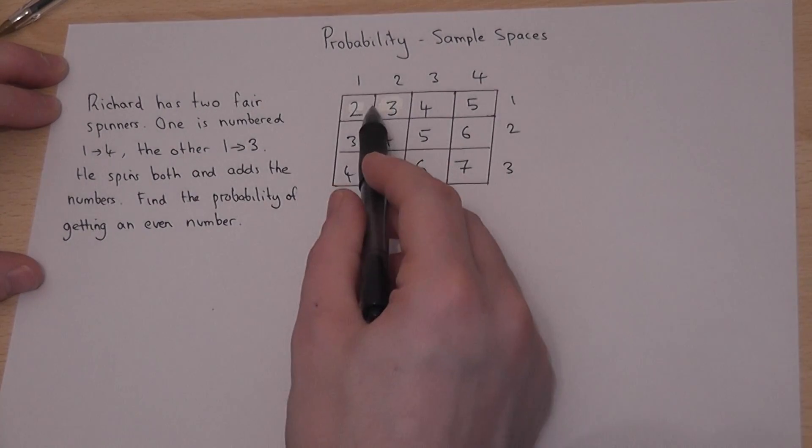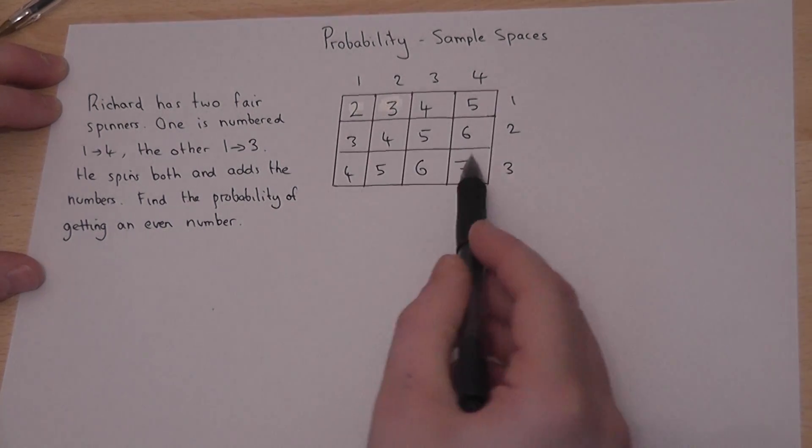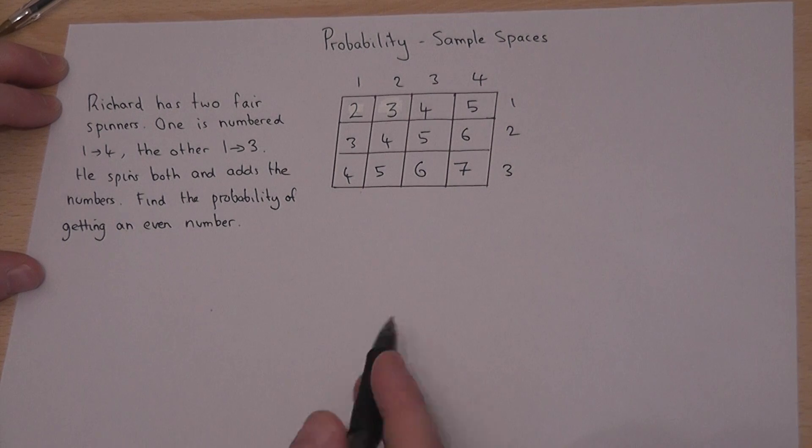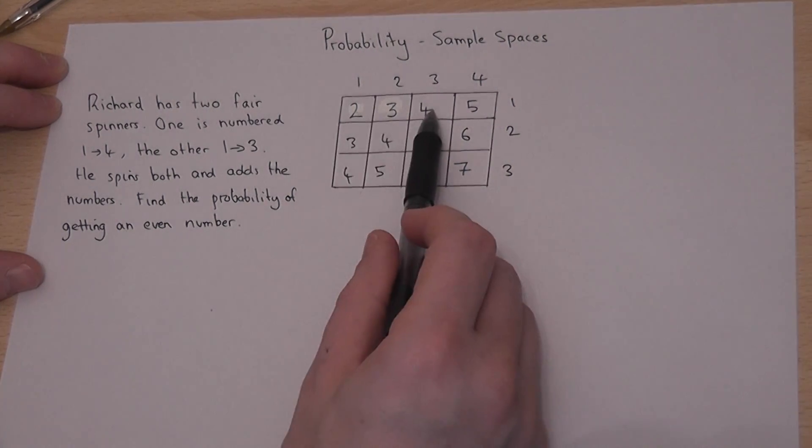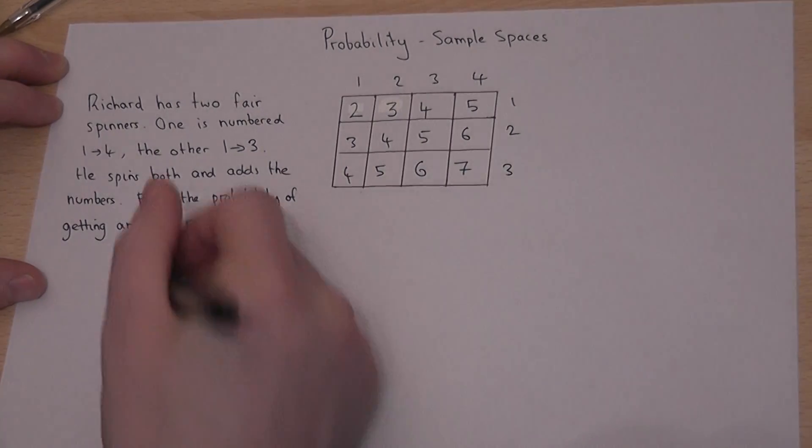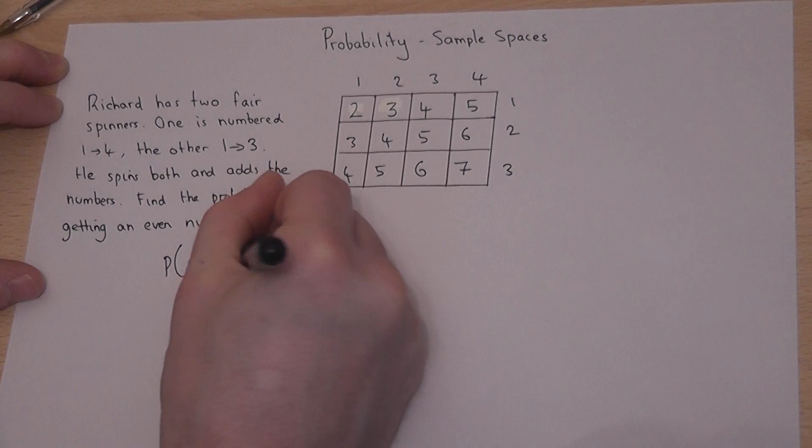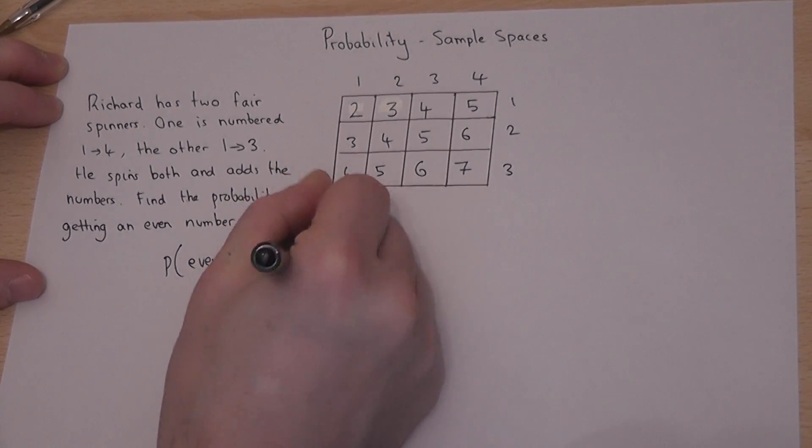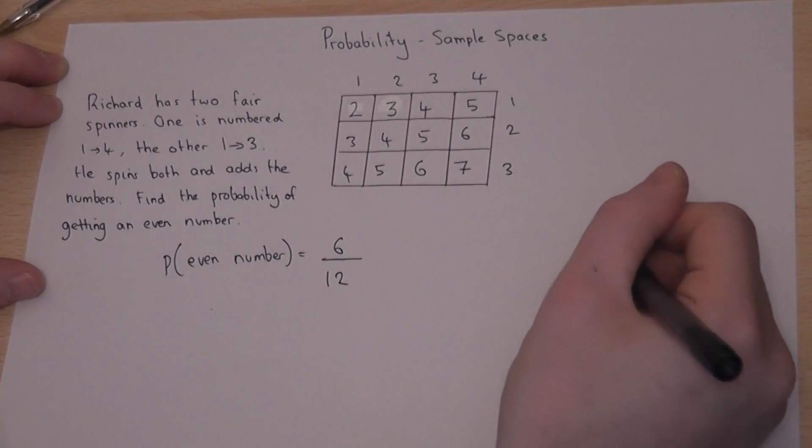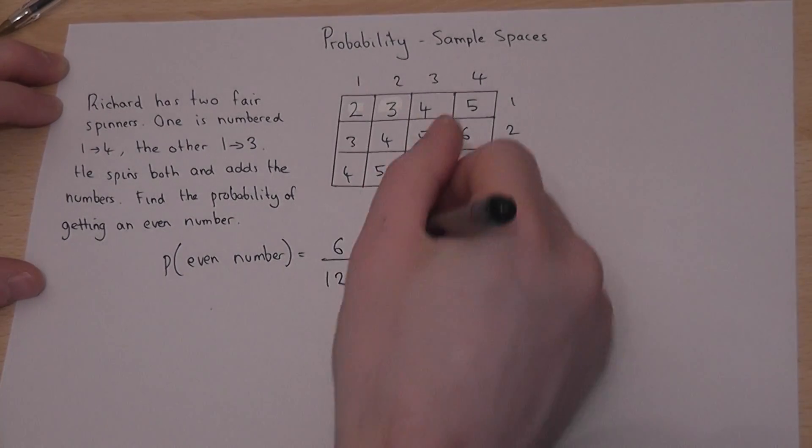Now there are twelve possible outcomes and the chance of getting an even number, well, if we look for the even numbers, they're one, two, three, four, five, six. So therefore the chance of an even number is equal to six out of the twelve outcomes. So therefore that's a half.